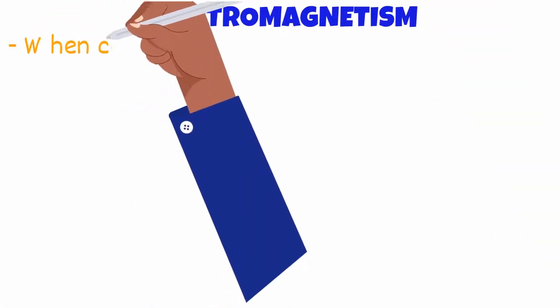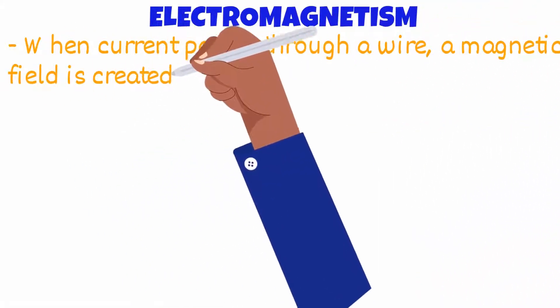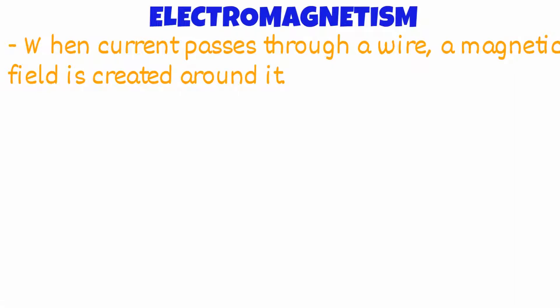Moving on from magnetism, when current passes through a wire, a magnetic field is created around it. We call this electromagnetism.